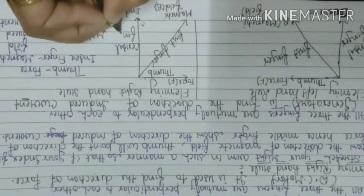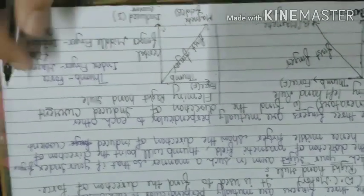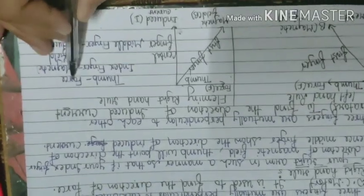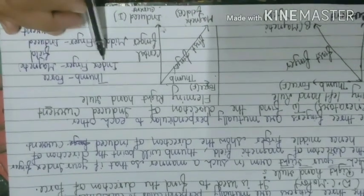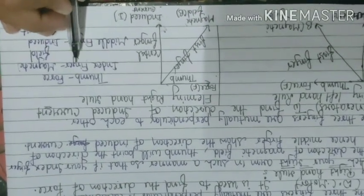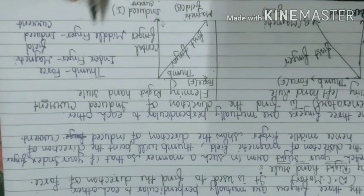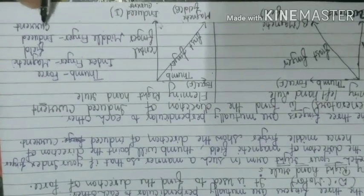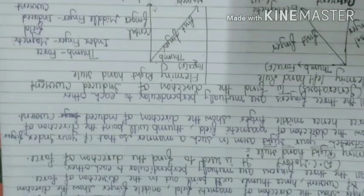As I have written on the side: thumb represents force, index finger (or first finger) represents magnetic field, and the middle finger represents induced current.